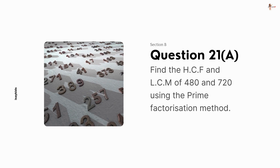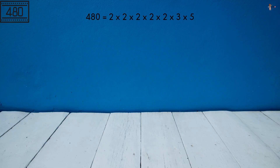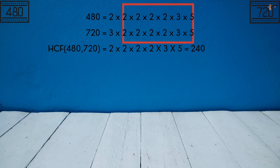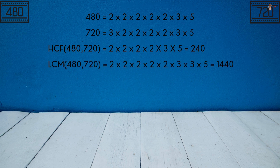Find the HCF and LCM of 480 and 720 using the prime factorization method. 480 is 2 times 2 times 2 times 2 times 2 times 3 times 5, and 720 is 2 times 2 times 2 times 3 times 3 times 5. So, HCF would be all the common factors, which is 240, and LCM would be all the factors, which is 1440.